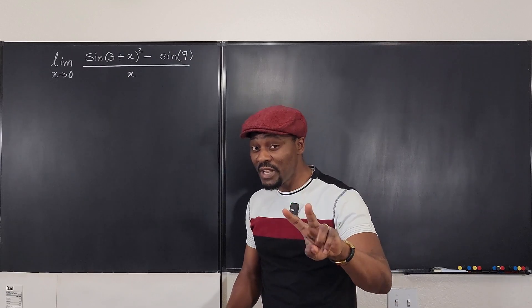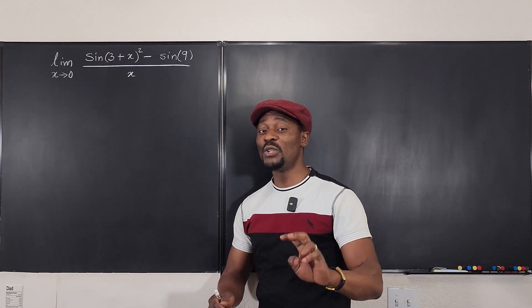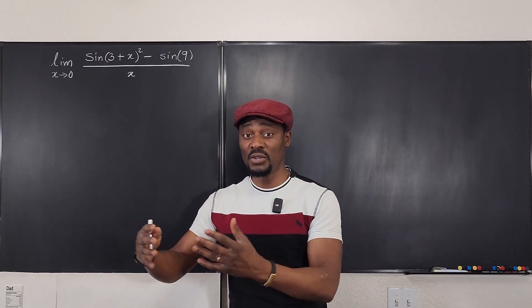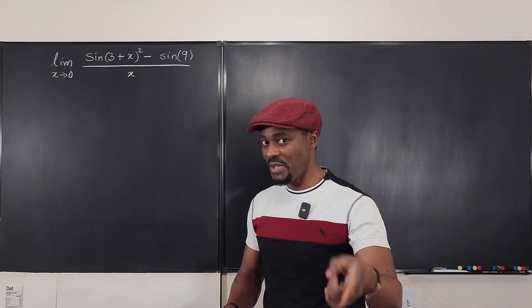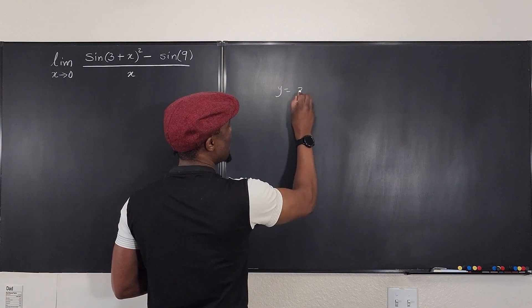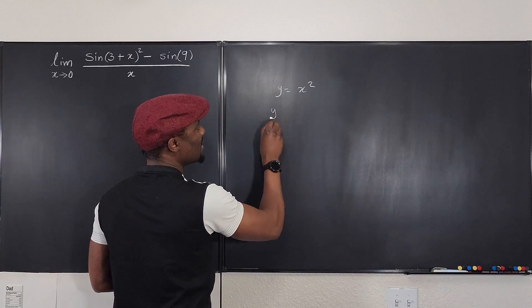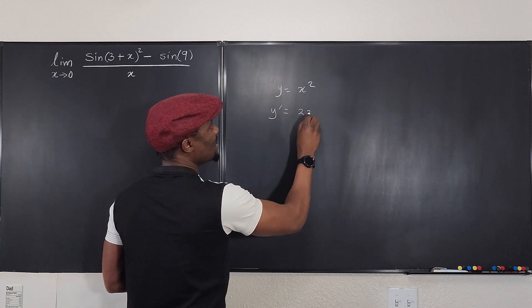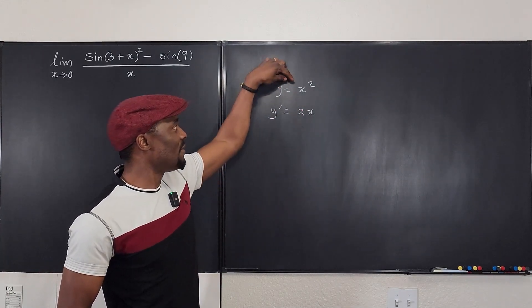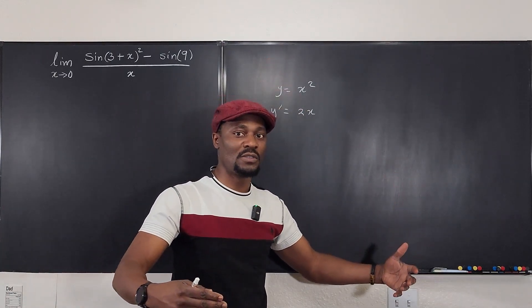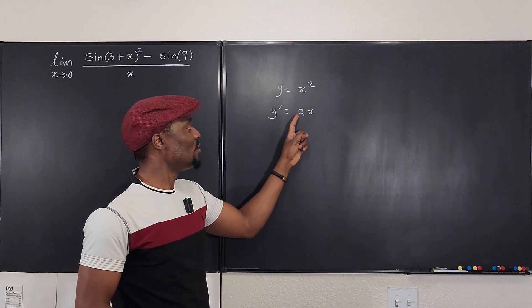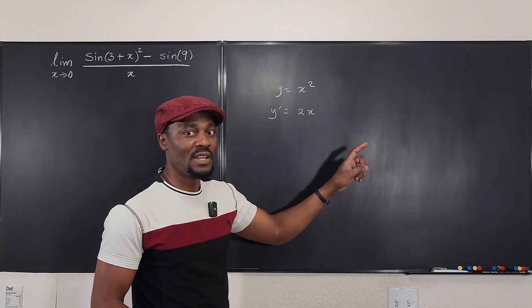Now, remember, there are two definitions, depending on what you're looking for. If you're looking for a general formula, a function representing the derivative of a function, let me explain that. If I told you y equals x squared, then the derivative of y will be 2x. You can see that this is a function. But if I say, what is the derivative of this function when x equals 1, then it means you have to plug in 1 here. And then you get 2 times 1, which gives you 2.